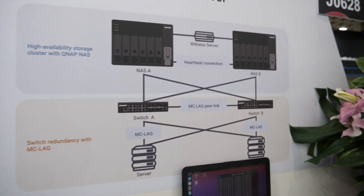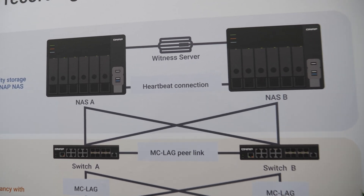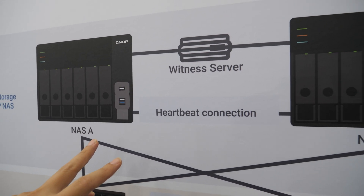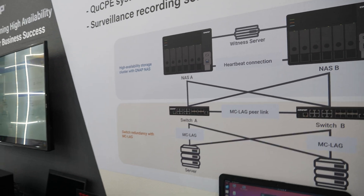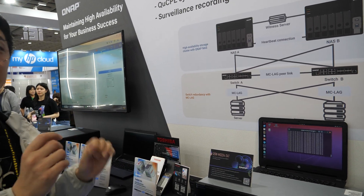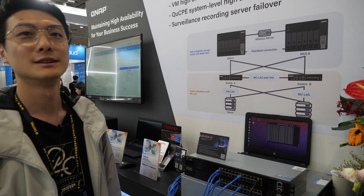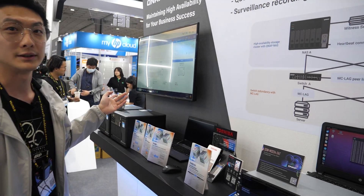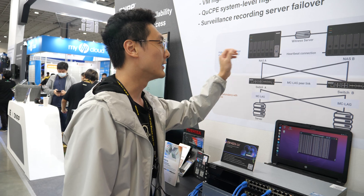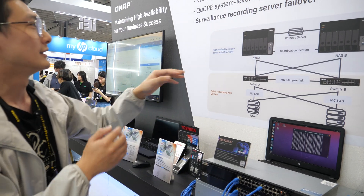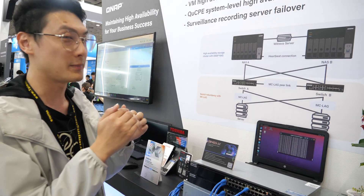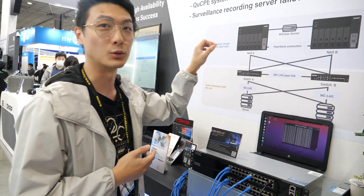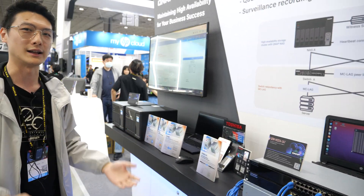So what is a heartbeat? What does heartbeat connection mean? The heartbeat connection makes sure these two NAS units have a real connection to confirm they're both alive — they are checking all the time. As I demoed, when we cut off the cable, the heartbeat detects the disconnect. Once the second unit loses heartbeat contact with the first one, it takes over.